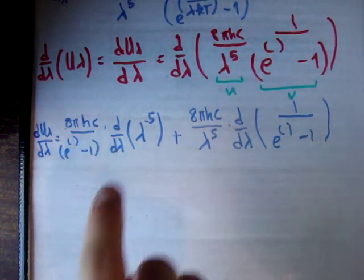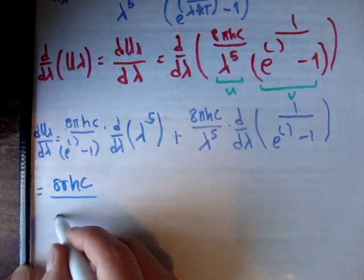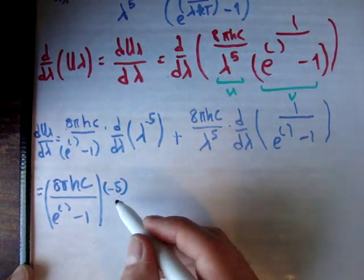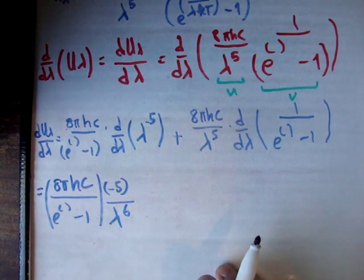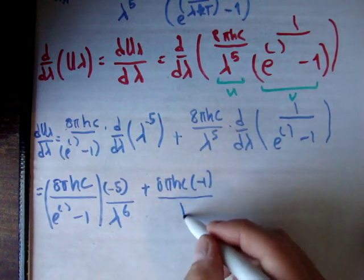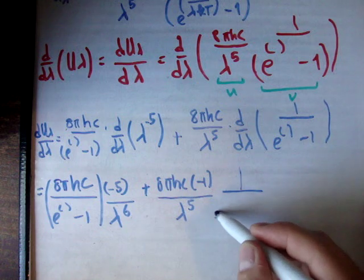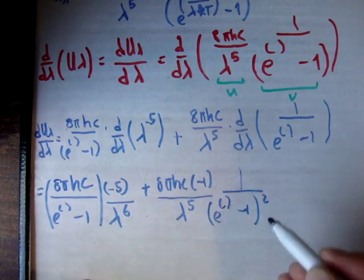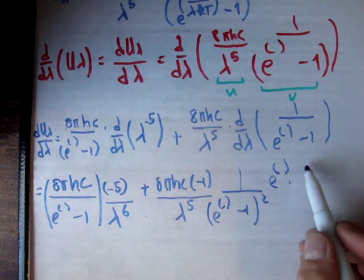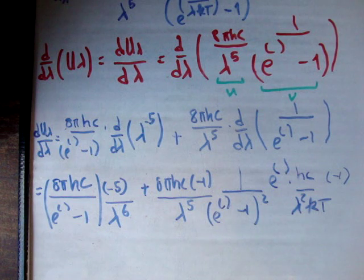So, let's go ahead and apply all that. I'm assuming you know how to differentiate your lambda to negative 5 here. So, that whole thing is going to be equal to 8 pi hc over e to the exponent minus 1, multiply that by negative 5 over lambda to the 6. We need to add to that 8 pi hc times negative 1 over lambda to the 5th. Then we have 1 over e to the exponent again, minus 1, all to be squared, multiplied by e to my exponent times our final derivative, which was hc over lambda squared kt times negative 1. And, yes, that is absolutely horrible.